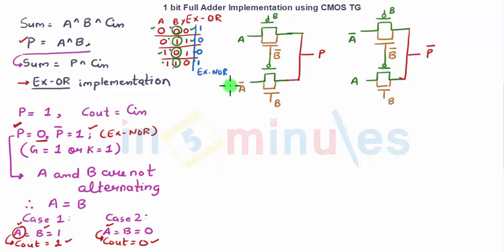We know that A_bar and B_bar can easily be obtained from inverters. We can assume A is an input — give it to an inverter to get A_bar — and B is an input — give it to an inverter to get B_bar. So now we have the propagate signal and the propagate_bar signal.